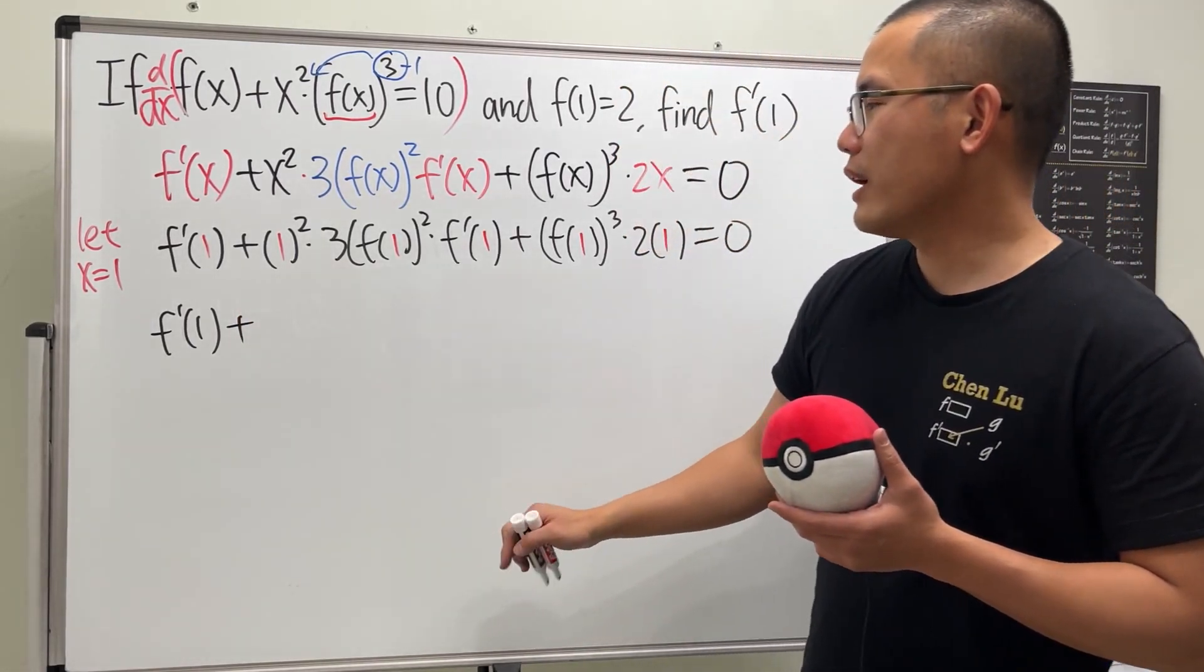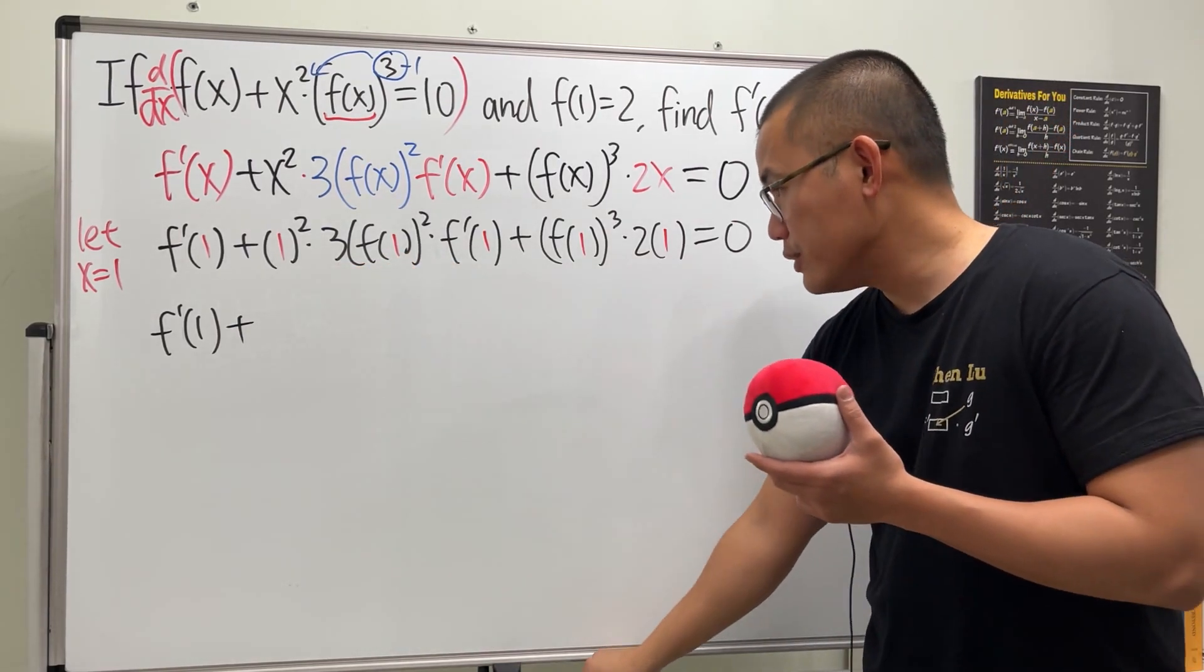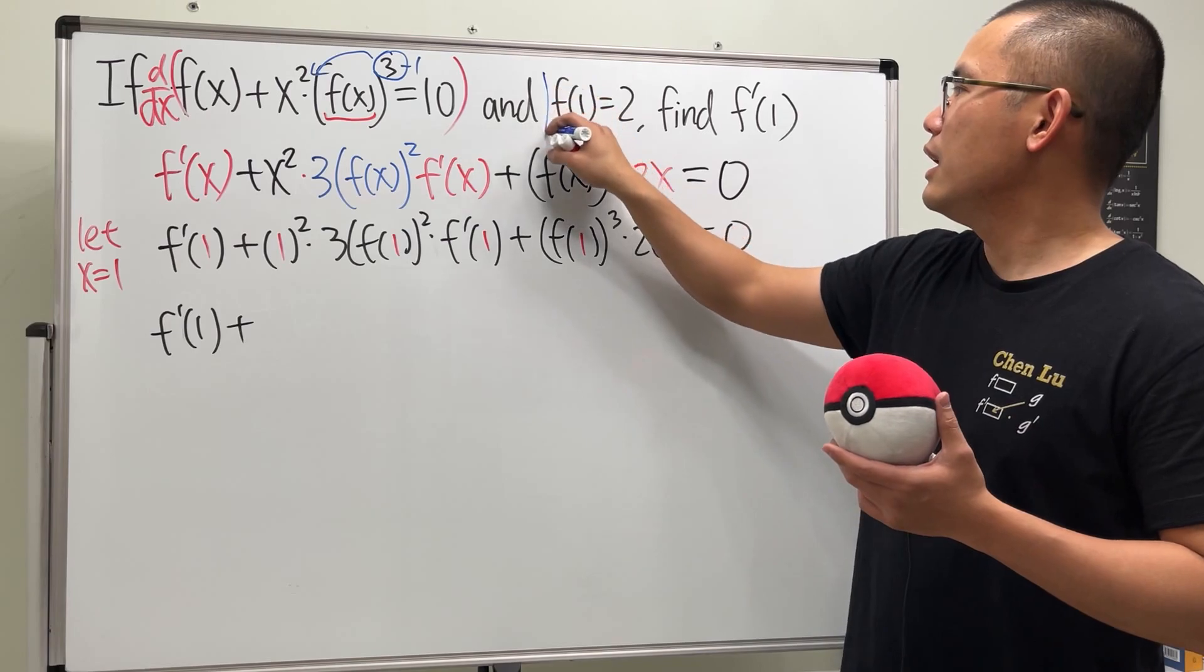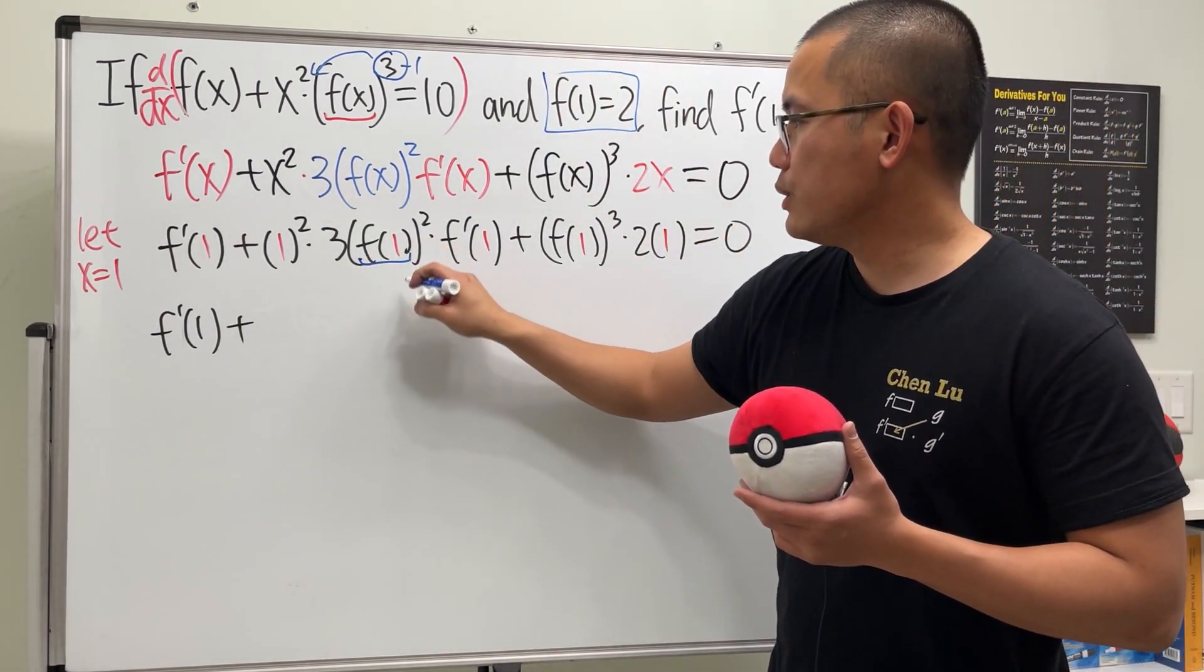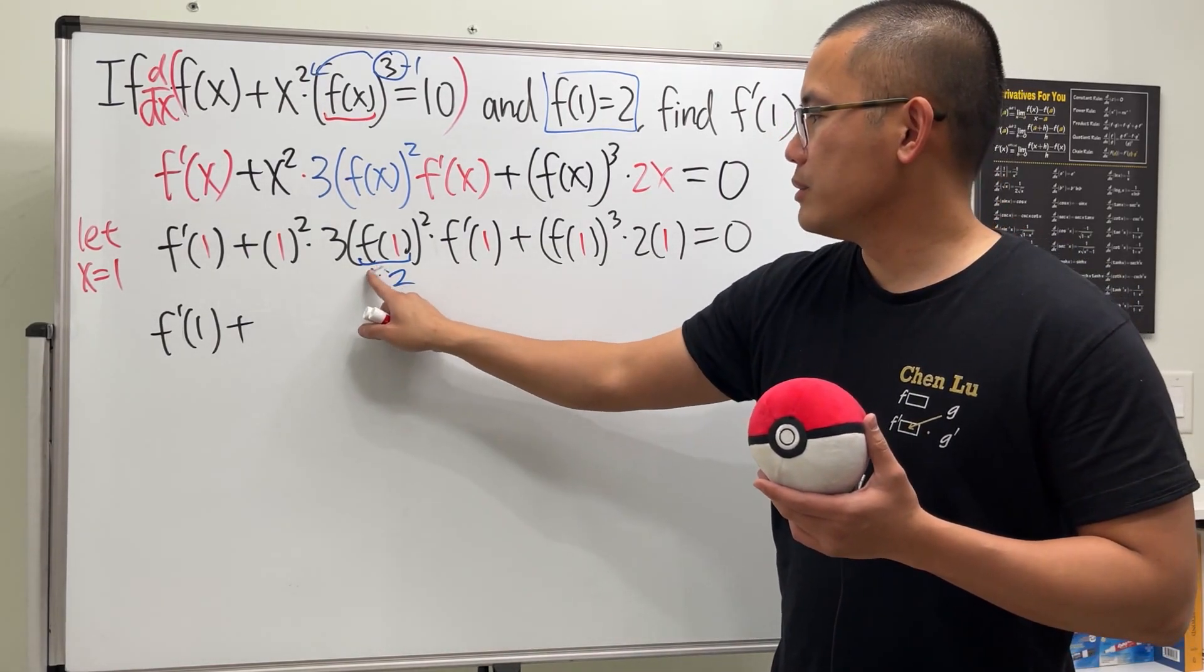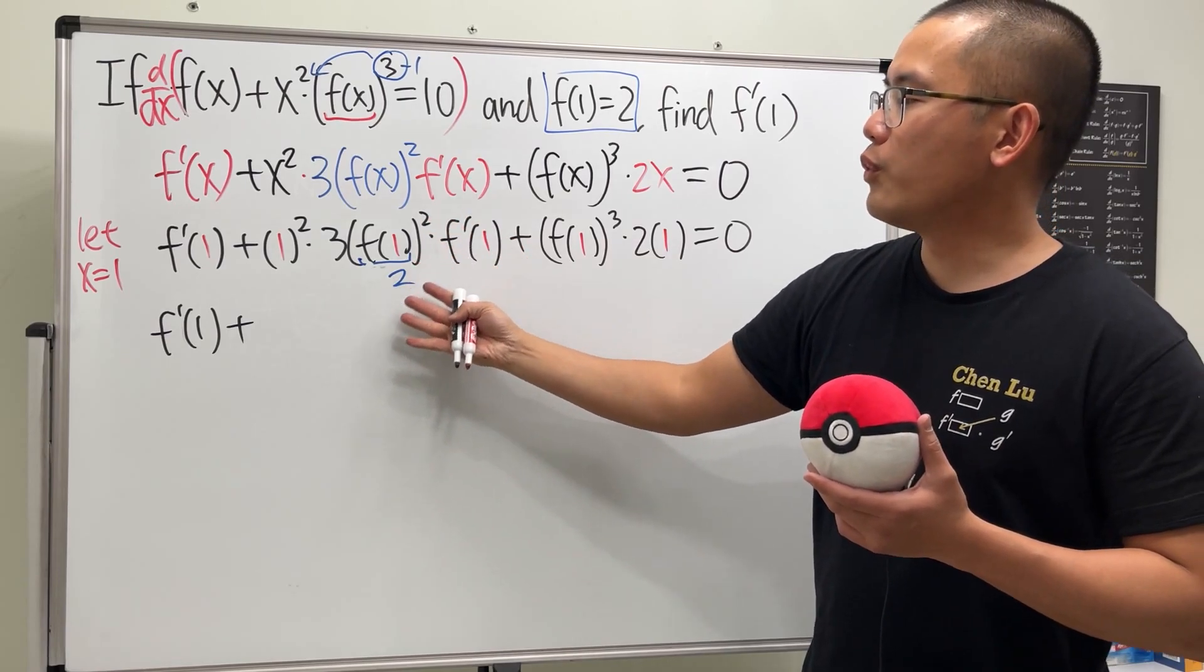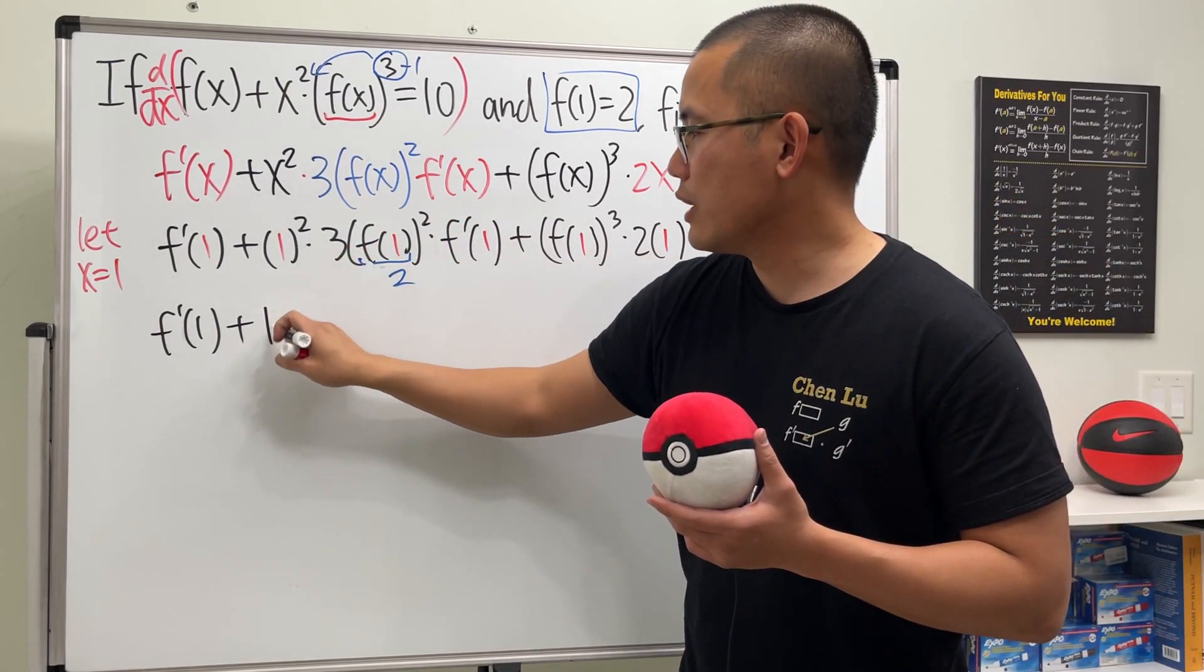Plus, this is 1. Okay. And 3 is 3, and then f of 1. We actually know the answer for that. You see, f of 1 is equal to 2. So this right here is equal to 2. So keep in mind, let me just write it down like this. 2 to the second power is 4, 4 times 3 is 12. So here we have 12.